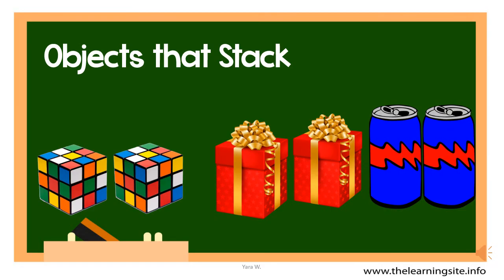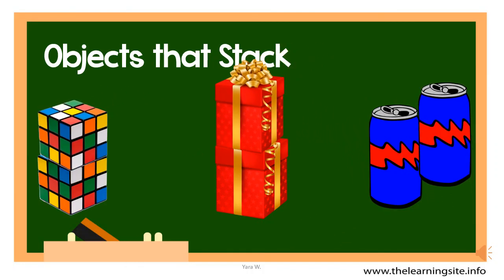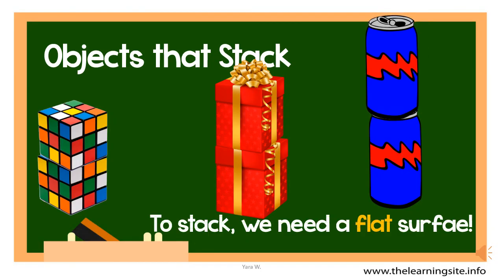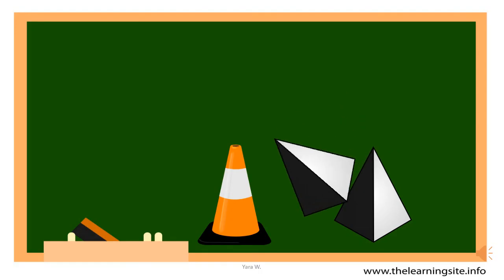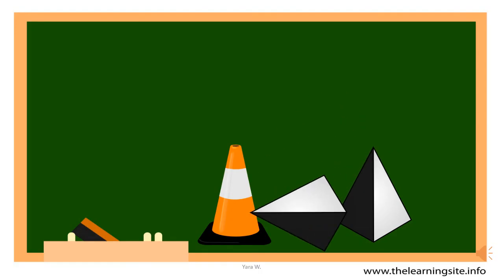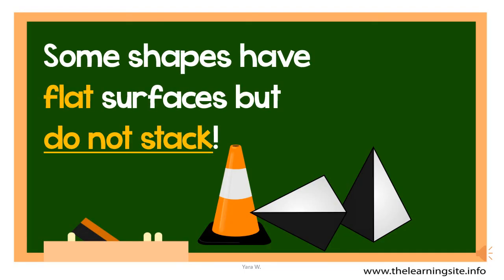Stacking is a different idea — it means being able to place more than one object over each other. To do that you will obviously need a flat surface, but do all flat surfaces stack? Let's try to stack these objects. The pyramid is made of all flat surfaces — let's try to stack it. It won't happen. Same thing with the cone: it has a flat bottom surface, but you can't place two cones over each other.